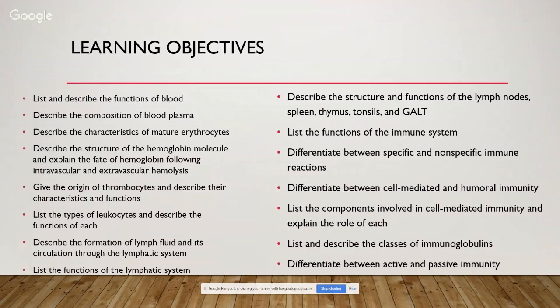We're going to give the origin of thrombocytes and describe their characteristics and functions, list the types of leukocytes and describe the functions of each, describe the formation of lymph fluid and its circulation through the lymphatic system and the functions of that lymphatic system. We're also going to describe the structure and functions of the lymph nodes, spleen, thymus, tonsils, and GALT. We're going to talk about the functions of the immune system, differentiate between specific and nonspecific immune reactions, cell-mediated and humoral immunity, the components involved in both, list and describe the classes of immunoglobulins, and differentiate between active and passive immunity.